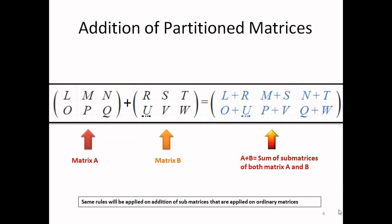Now I am showing addition of two partitioned matrices. Originally matrix A was too big, and likewise matrix B was also a big one. So we decided to make sub-matrices of each. This resulted in sub-matrices L, M, N, O, P, Q for matrix A.